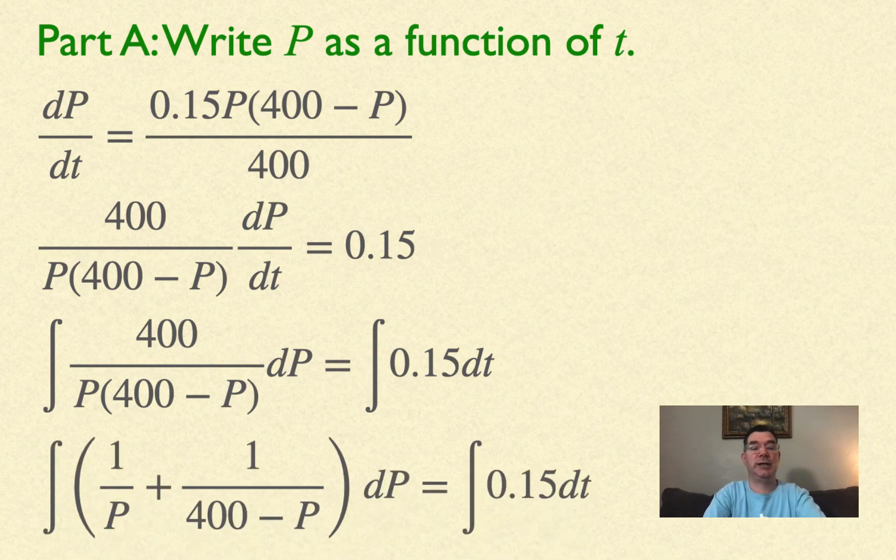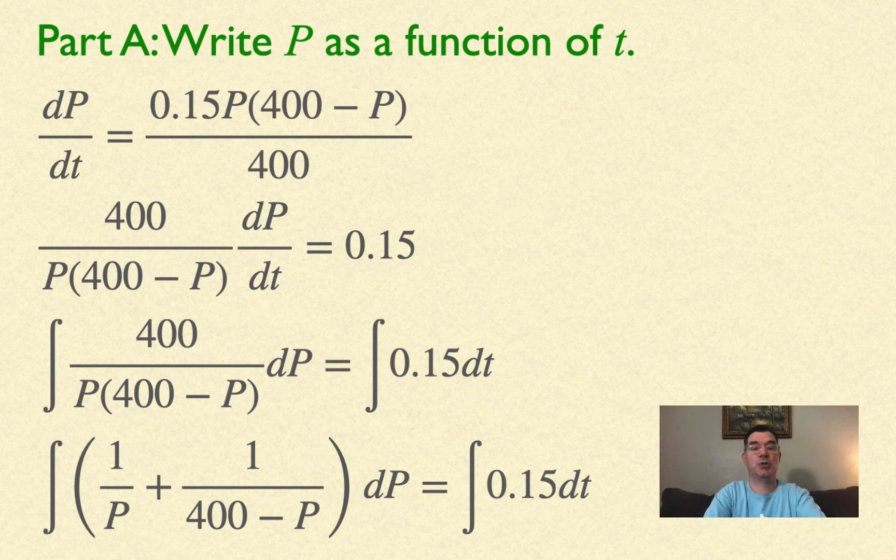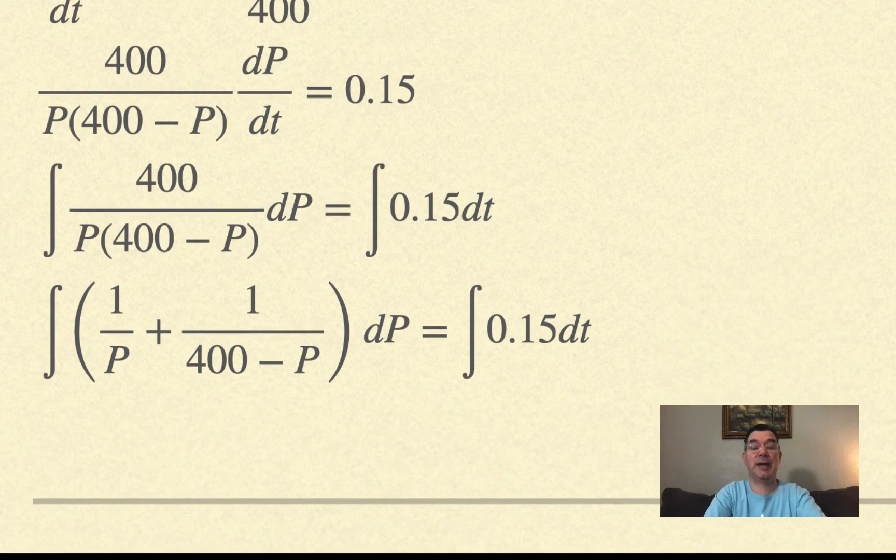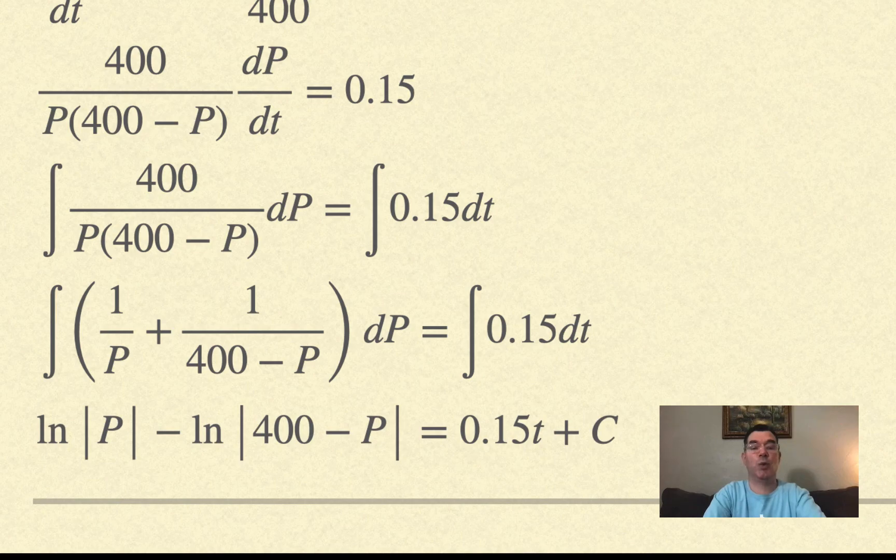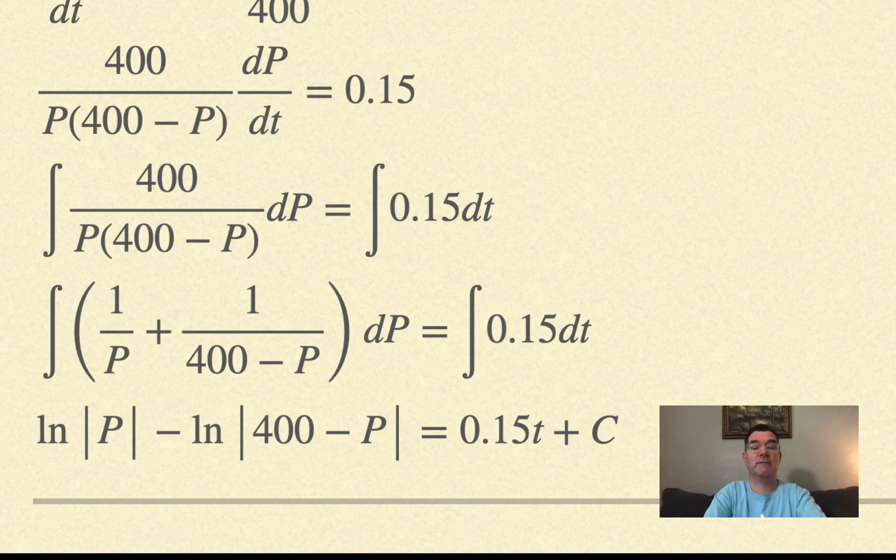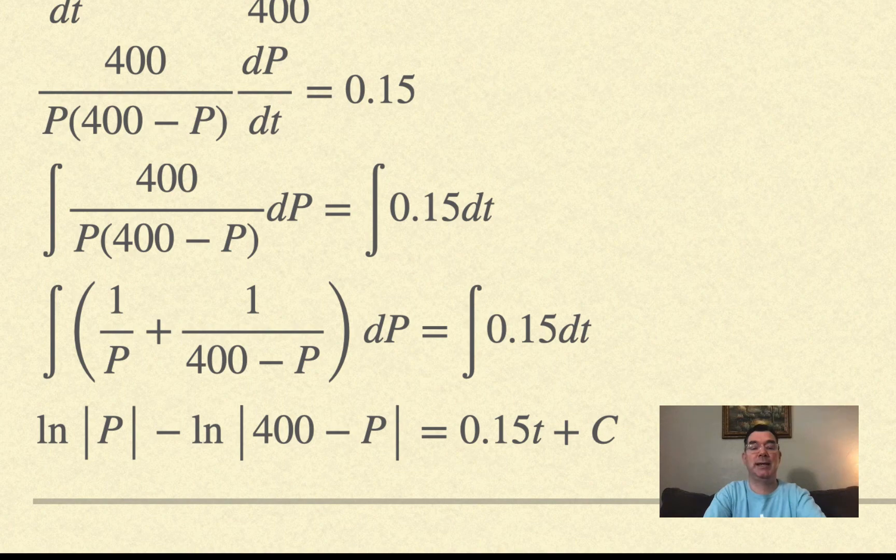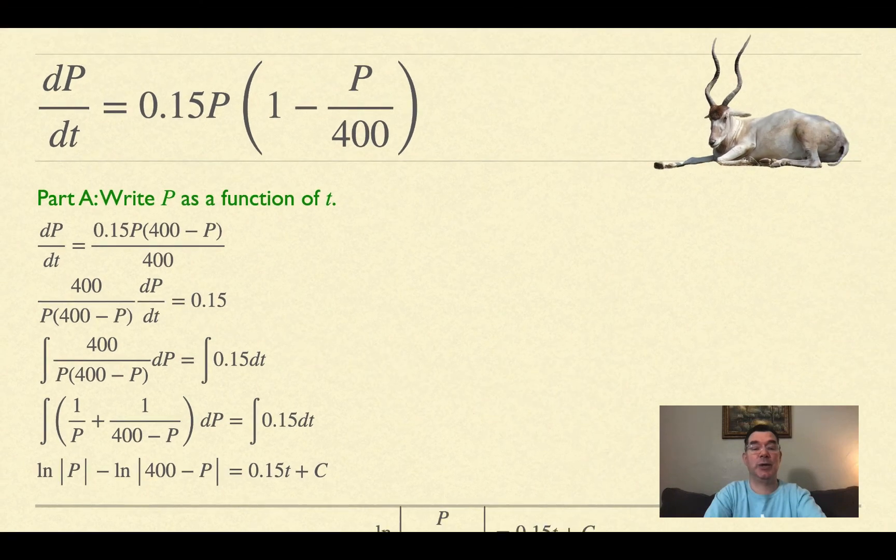I used integration by partial fractions to write that integral as 1/P + 1/(400-P). The antiderivative is ln(P) - ln(400-P) = 0.15t + C.